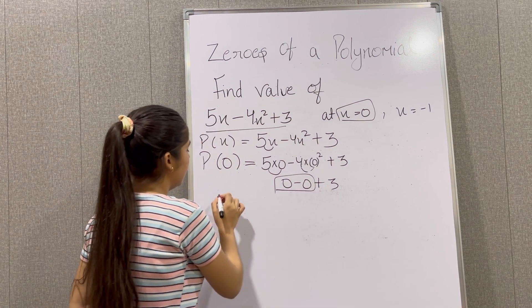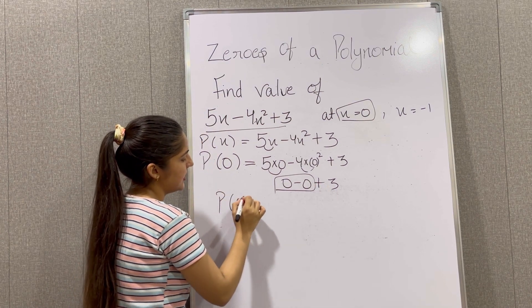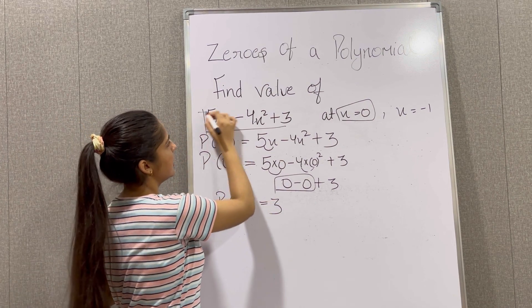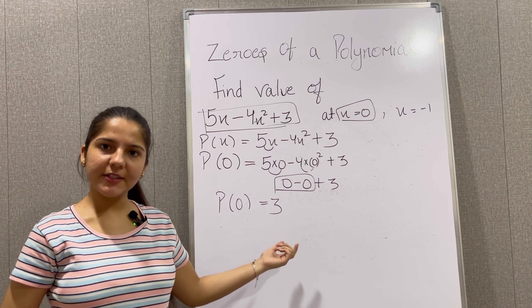So our answer P(0) equals 3. That is when we put x equals 0 in this polynomial, our answer is 3.